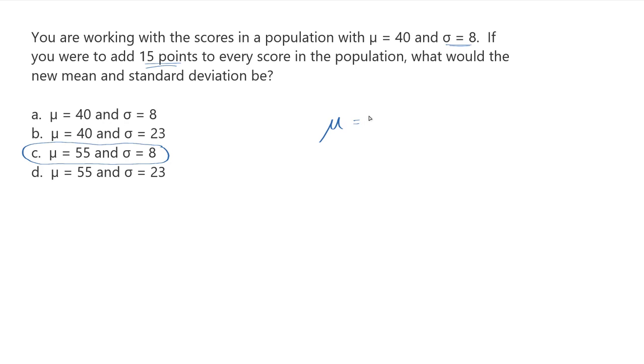My mean starts off as being 40, and the population standard deviation starts off as being 8. So why would I add the 15 points to the 40 in order to get a mean equals to 55, but not do anything at all to the standard deviation and just stick with 8? Why doesn't the standard deviation change when the population mean does?